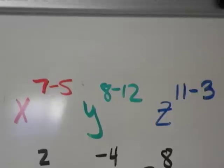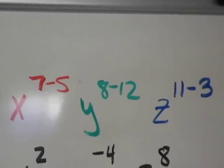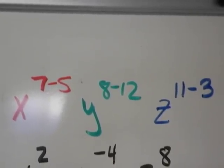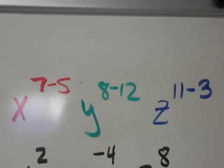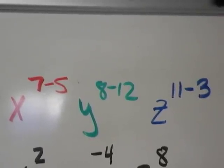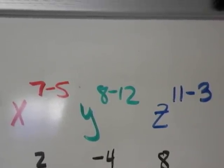7 minus 5 is 2, so you have x squared. 8 minus 12 is negative 4, so you're going to have y to the negative 4 power, and 11 minus 3 is 8, so you're going to have z to the 8th.